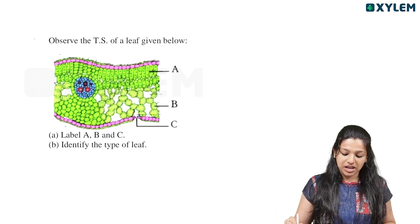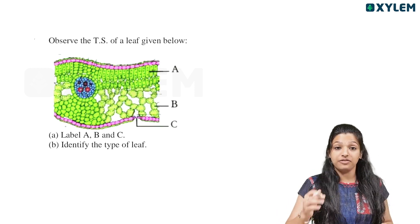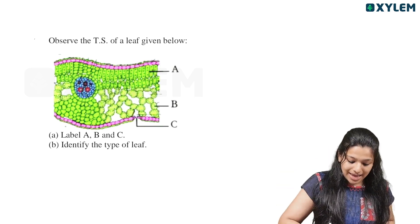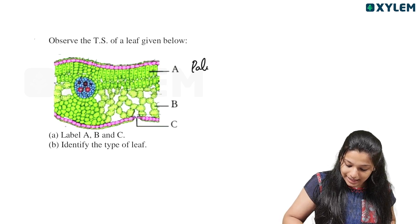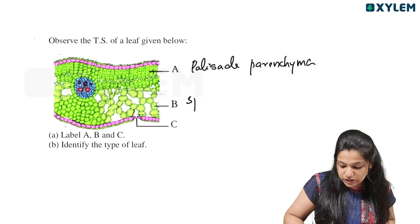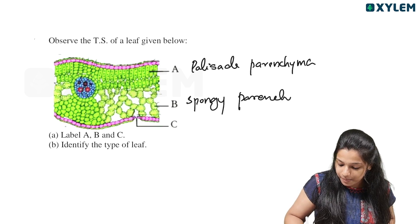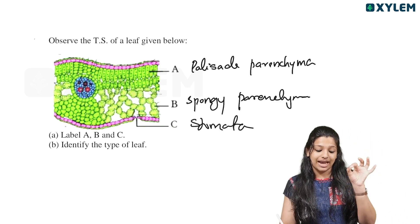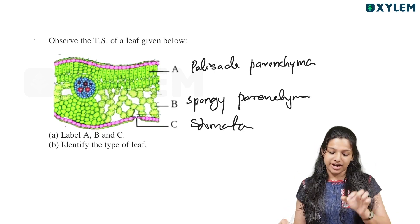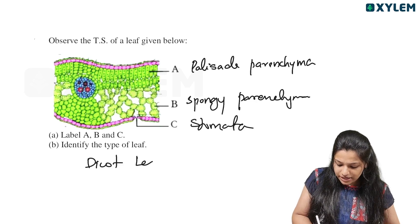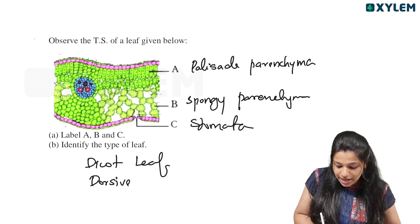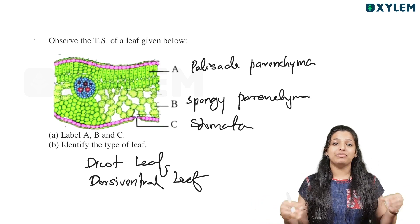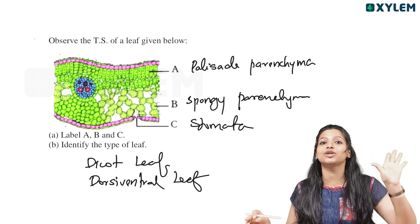Observe the cross-section of a leaf given below. Label A, B, and C, and identify the type of leaf. A is the palisade parenchyma, B is the spongy parenchyma, and C is the vascular bundle or vein. This type of leaf is called a dicot leaf, also known as a dorsiventral leaf.